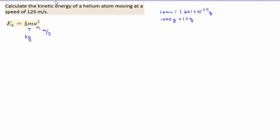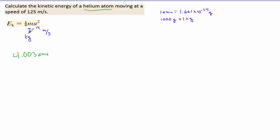Let's look at our first problem: calculate the kinetic energy of a helium atom moving at a speed of 125 meters per second. They've given us the velocity and want to know the kinetic energy. We know the velocity, but we do not know the mass — but we're told it's a helium atom. So m in this problem is the mass of one helium atom. Looking at the periodic table, helium has a mass of 4.003 atomic mass units, or grams per mole. We need it in kilograms, so that's where those conversion units come in — first converting AMUs to grams, then grams to kilograms.